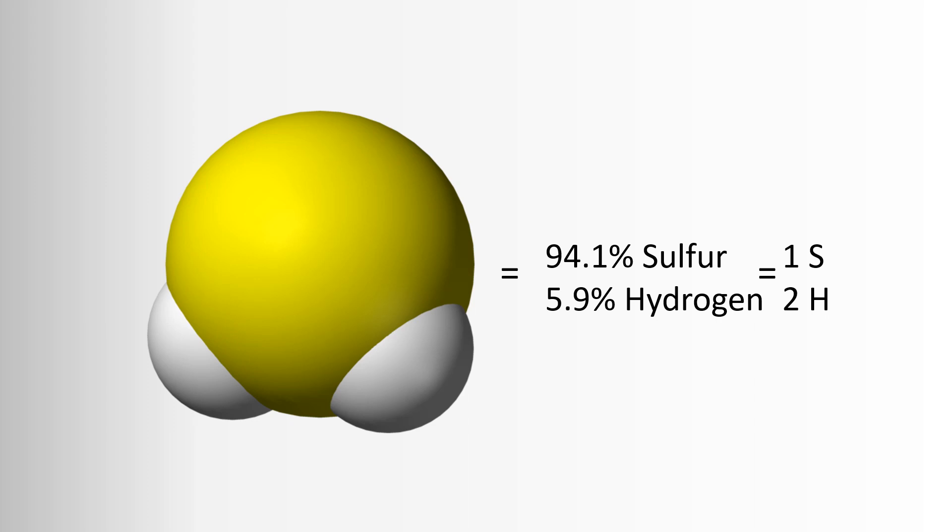However, if we look at it in terms of atoms, there are two hydrogens for every one sulfur. You can begin to see the problem. Not all elements weigh the same. In fact, every element has its own unique mass. Therefore, we cannot look at chemicals solely based on mass because it won't give us the actual relationship of the elements to each other. We need a way to normalize for the mass.